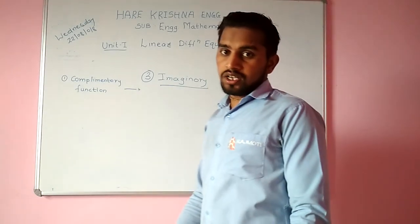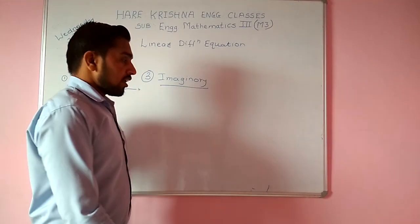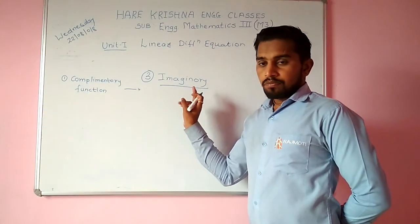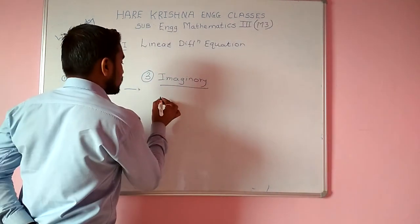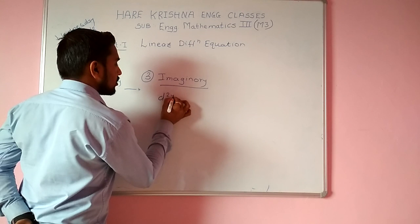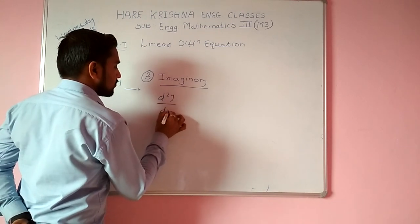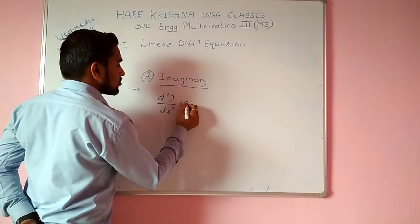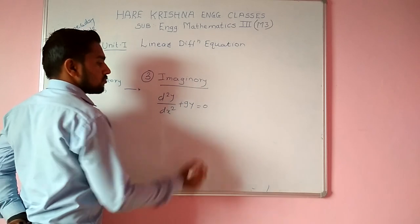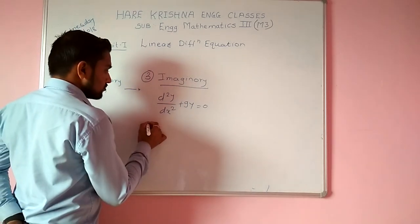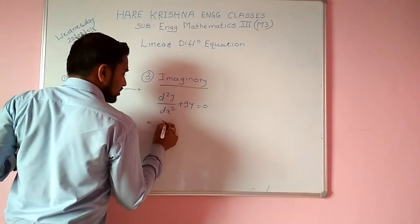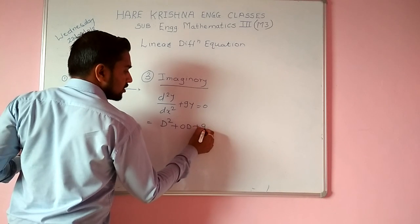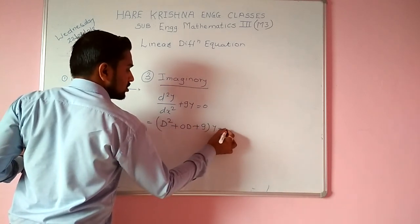Same solution process as the previous two methods. Example: d²y/dx² + 9y = 0. Same method: is there a D term? No. So it becomes: D² + 0·D + 9 = 0.